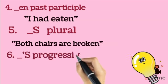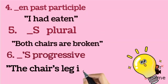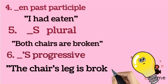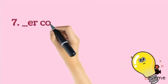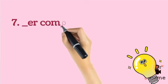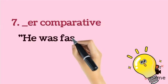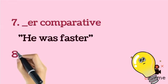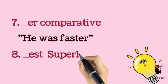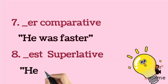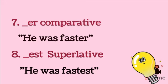The sixth inflectional morpheme is apostrophe -S, used as a possessive. For example: the chair's leg is broken. The seventh inflectional morpheme is -ER, used as a comparative. For example: he was faster. The eighth inflectional morpheme is -EST, used as a superlative. For example: he was the fastest.